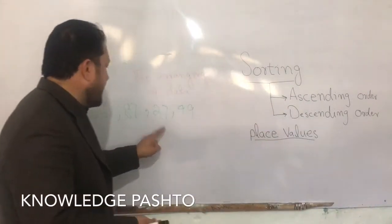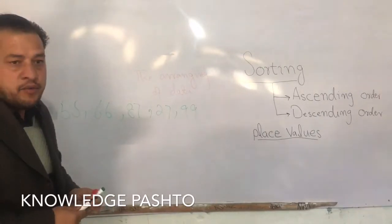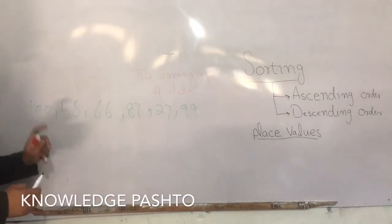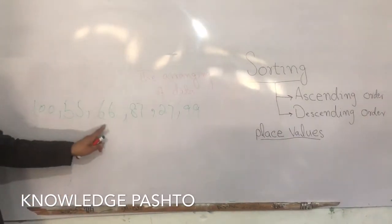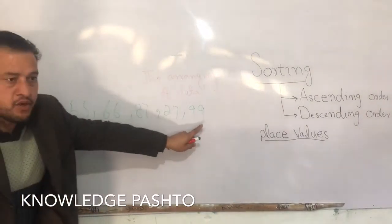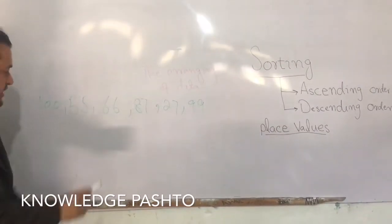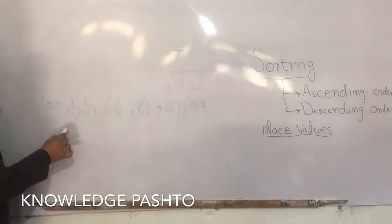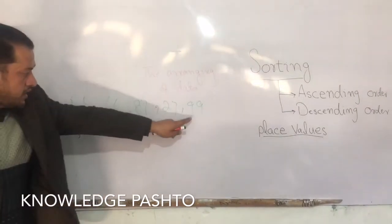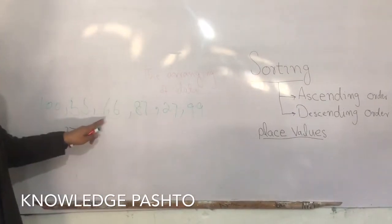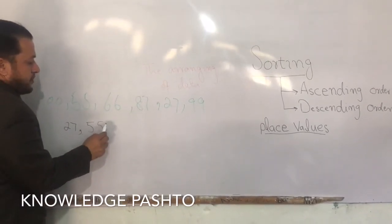I am telling you that this data has to be in ascending order. In ascending order, you start from the smallest number. The smallest number is less than the others. So you have to start with 27, which is less than the smallest — wait, no.